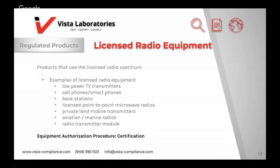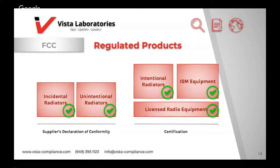Products that use the licensed radio spectrum are classified as licensed radio equipment and require the certification procedure. Examples include cell phones, smartphones, base stations, and licensed point-to-point microwave radios. Radio transmitter modules can be either unlicensed or licensed. Several rule parts regulate this category: citizen broadband radio service is Part 96, broadband radio services Part 27, cellular service Part 22, and signal boosters Part 20 and Part 90. Determining which category your product falls under is the first step in selecting the appropriate equipment authorization procedure.